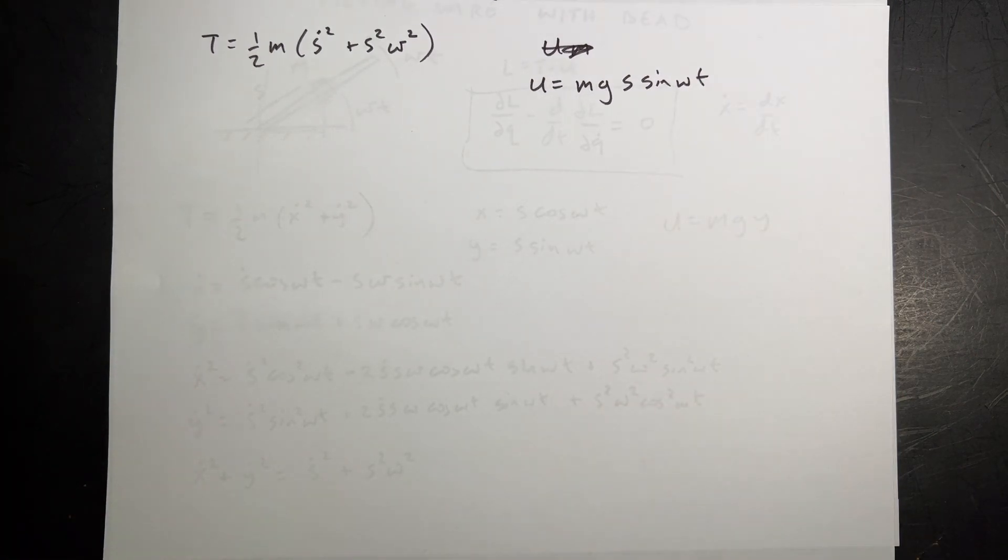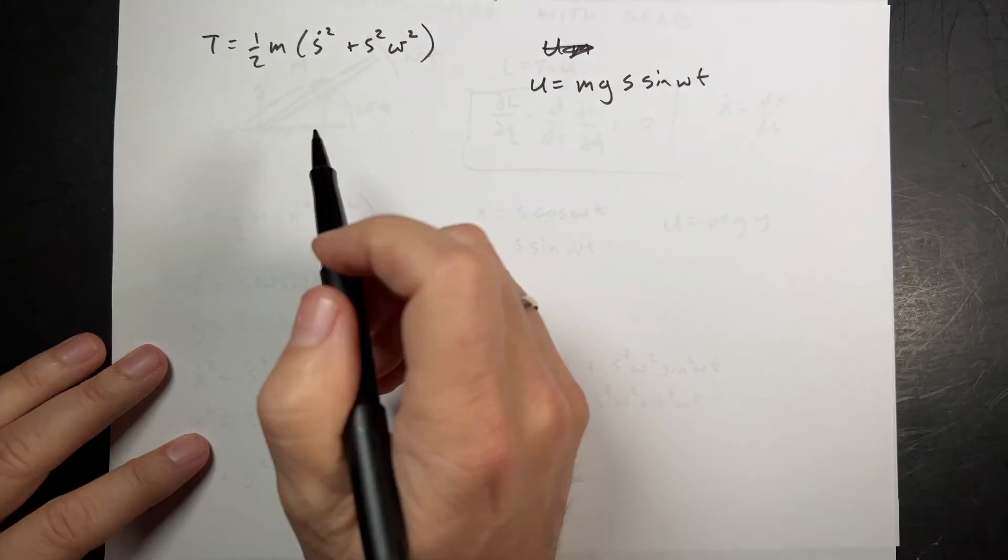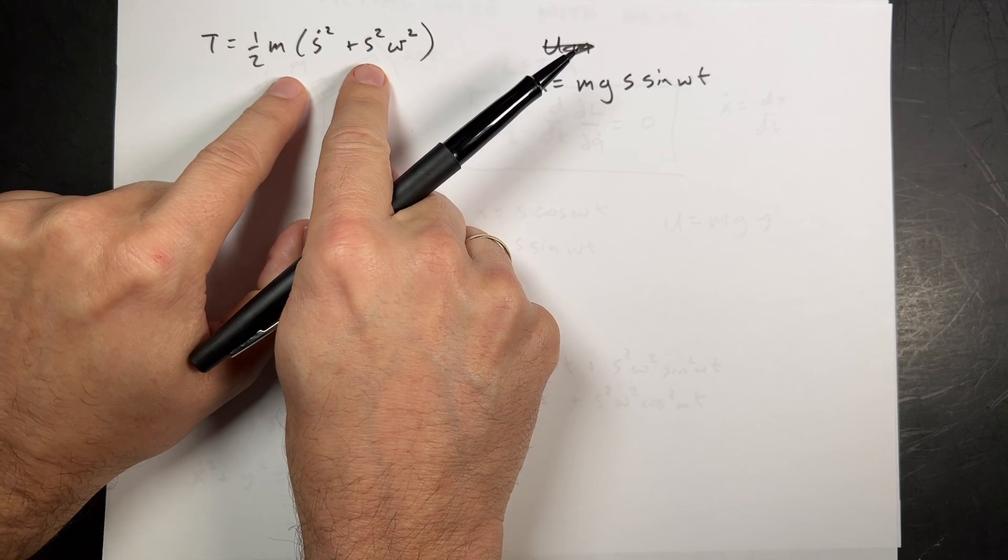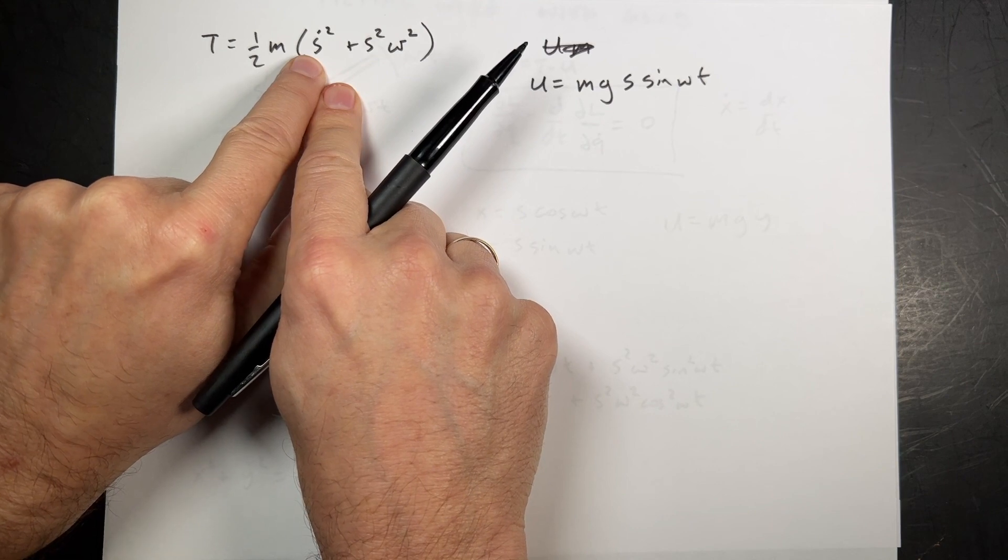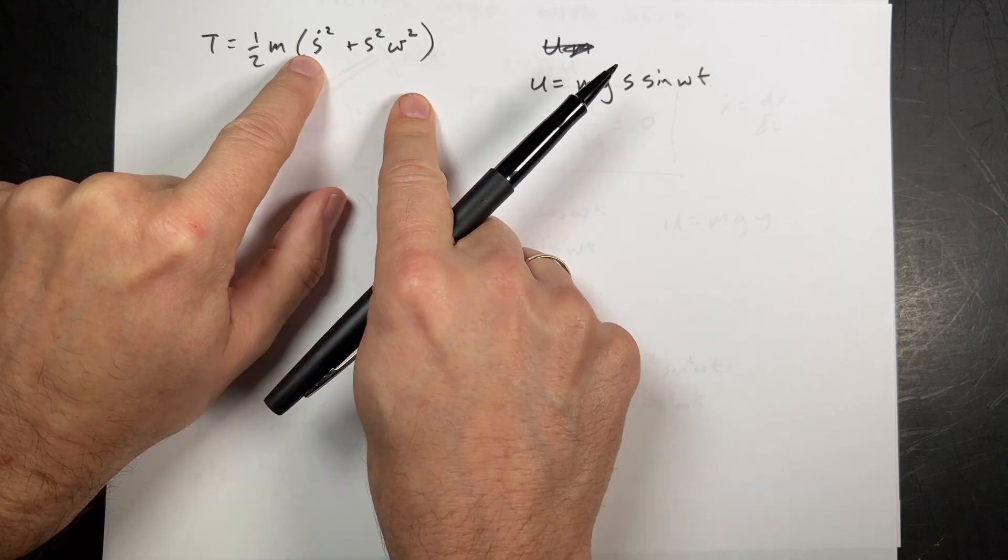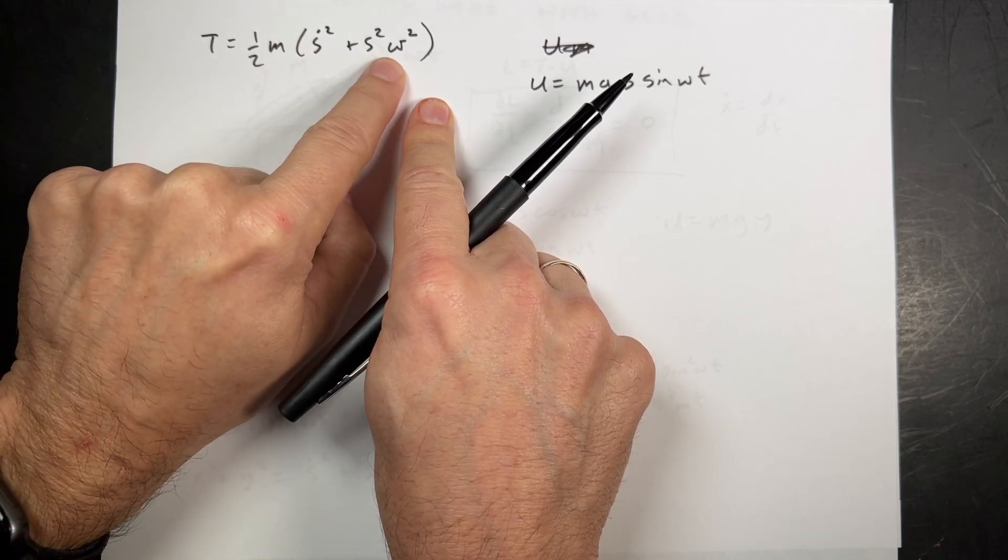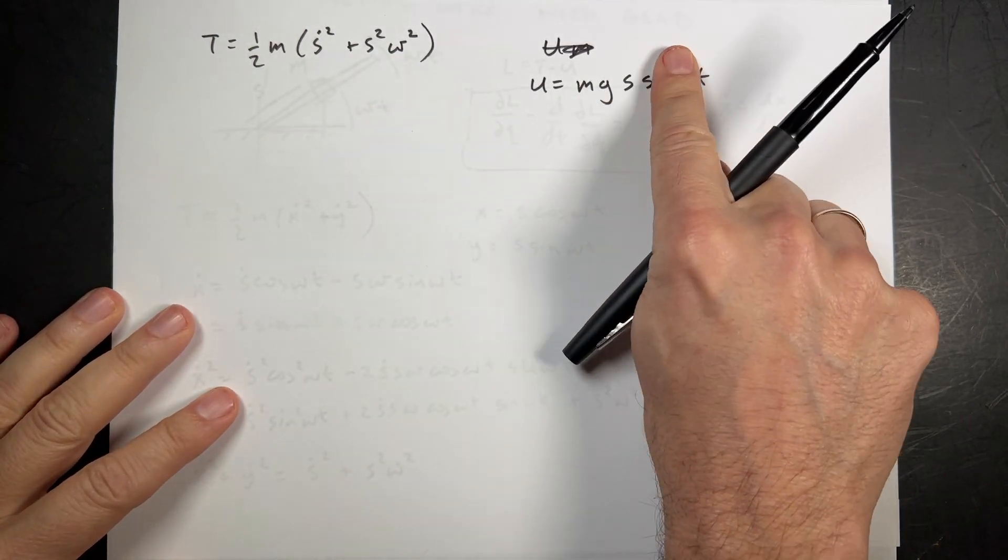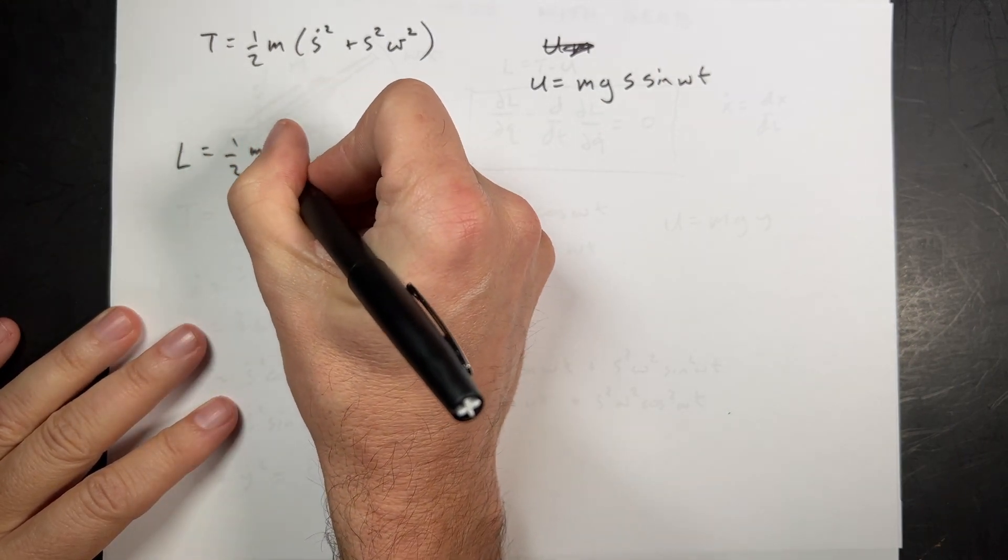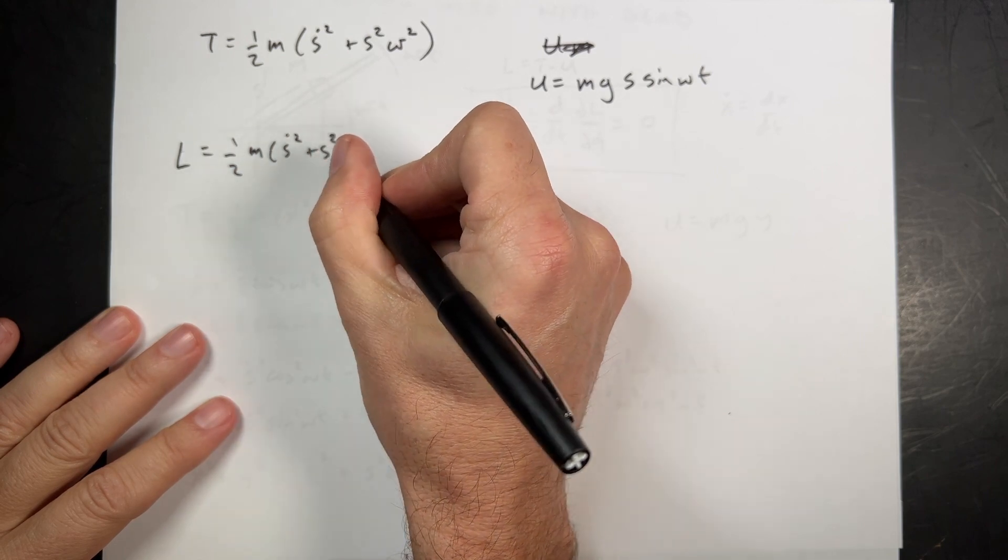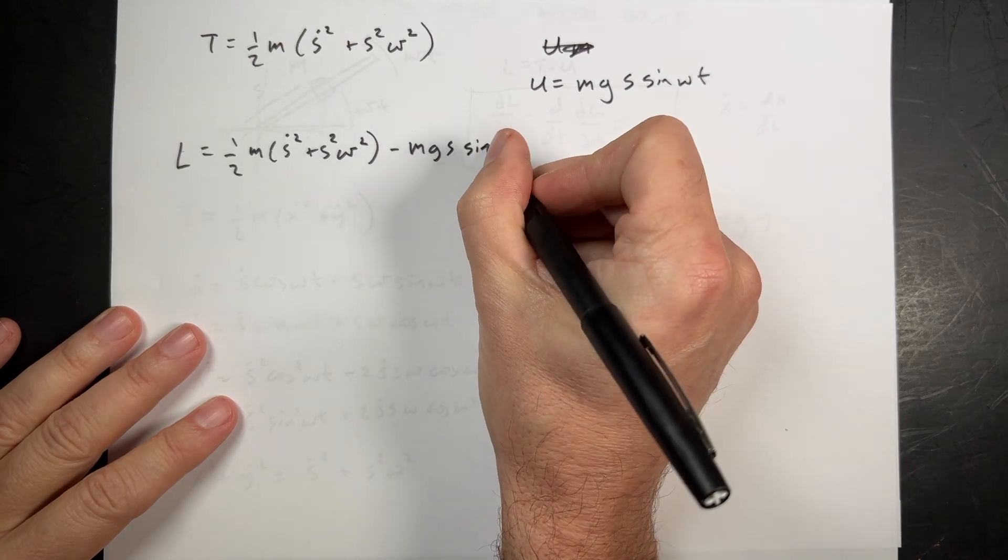X dot squared plus y dot squared. So you will notice that if I take these two terms and add them together I can factor out an S dot squared. And then I have cosine squared plus sine squared which is one. These two terms are the same except for the negative sign. So they cancel. Again over here I can factor out S squared omega squared. So now I can go ahead and write the kinetic energy. The potential energy is just mgy. So I can write the kinetic energy and the potential. And the Lagrangian. So I have T equals one half m times s dot squared plus s squared omega squared.